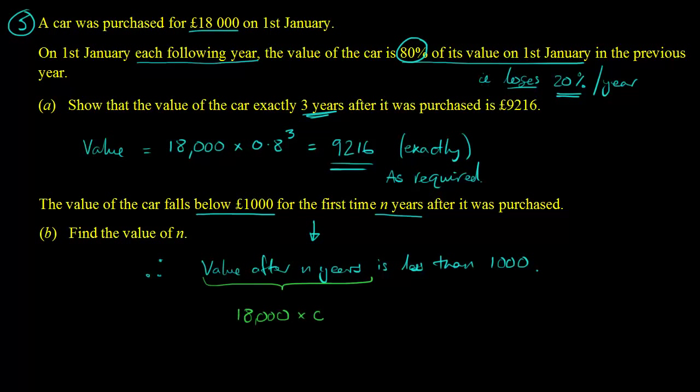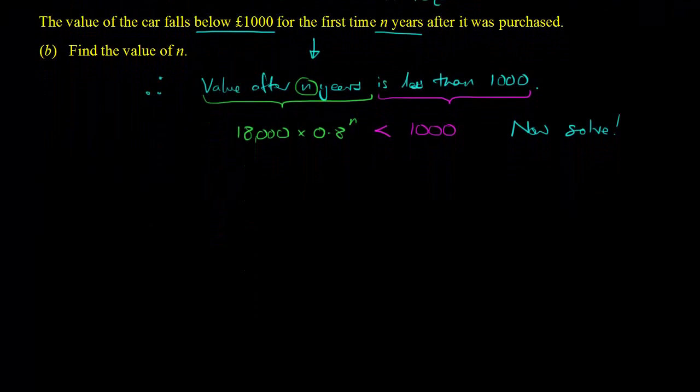Let's take each part of that and write it down mathematically. So the value after n years is 18,000 times 0.8 to the power n. And then if I want to say that is less than £1,000, I simply use an inequality sign, less than 1,000. And I'm set up now to find my answer. That's the hard part done, really.